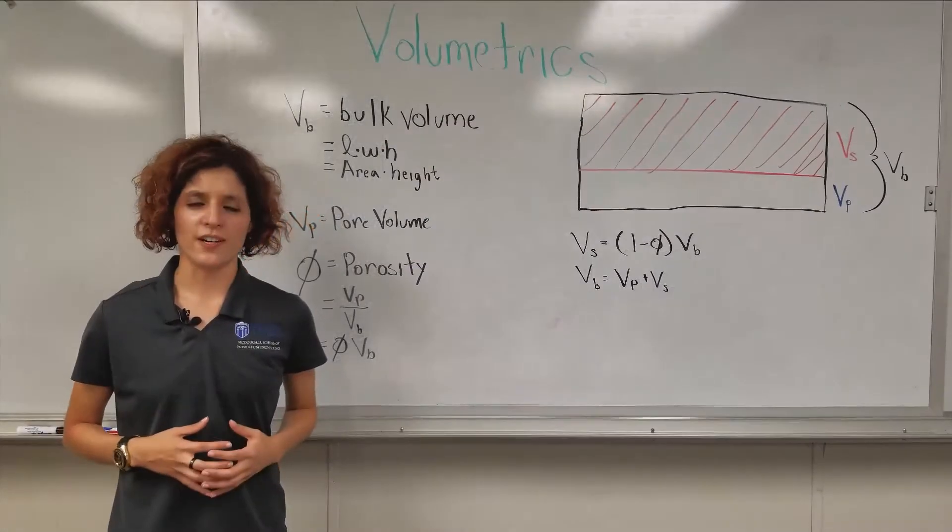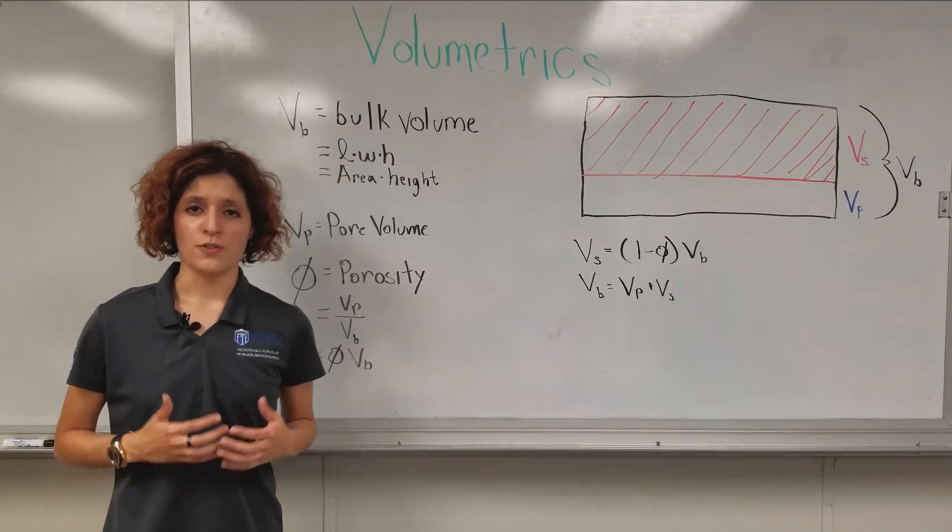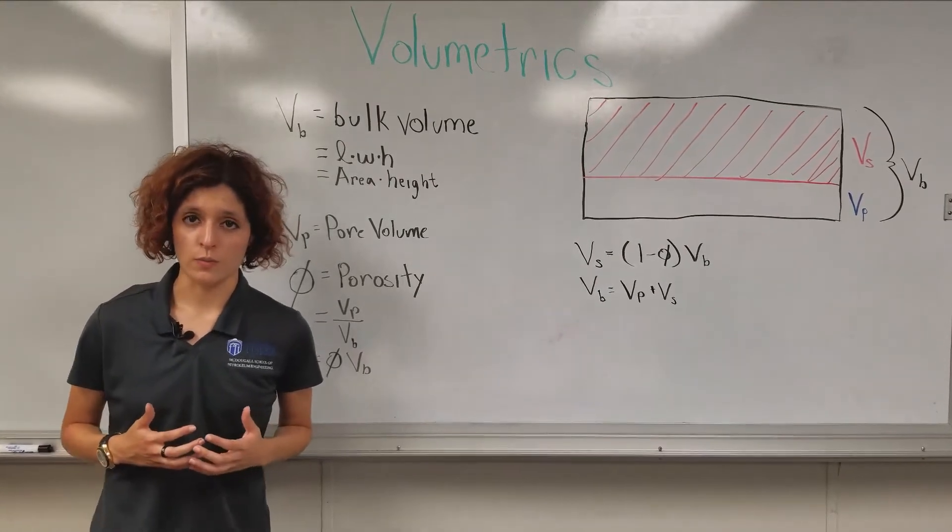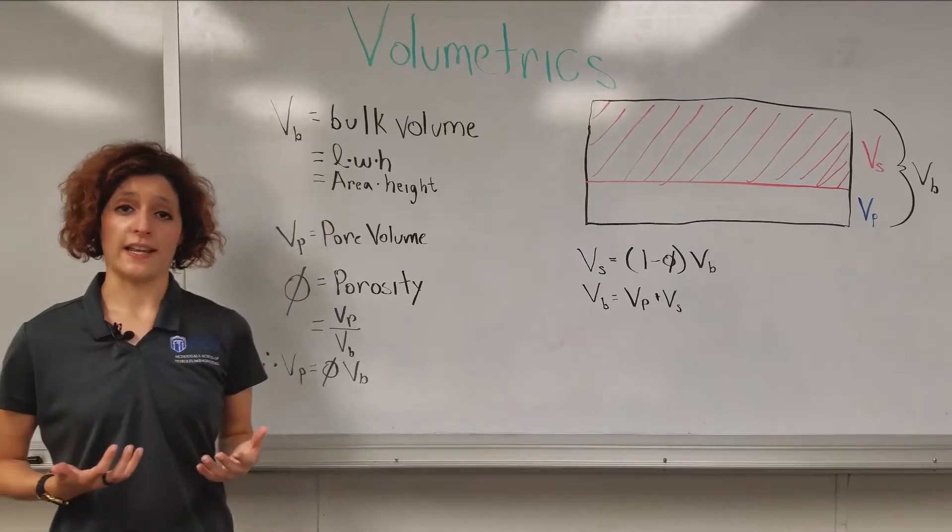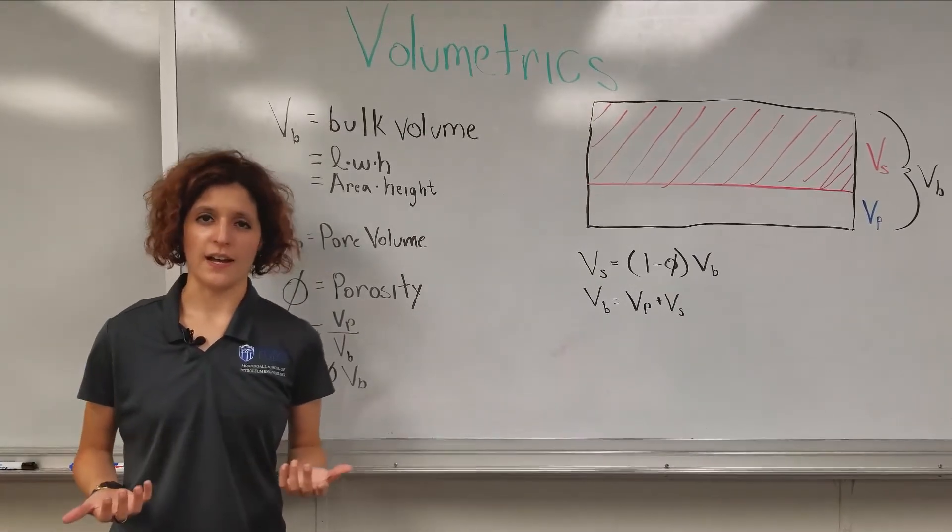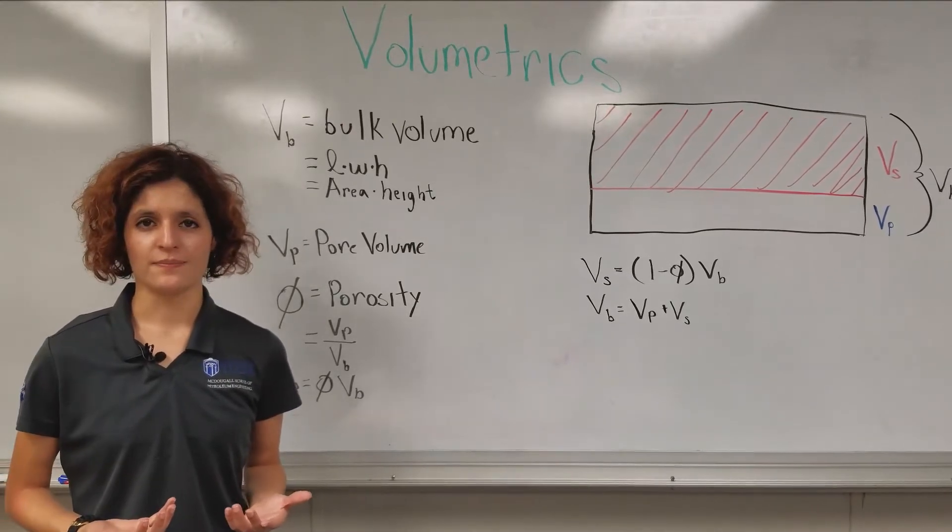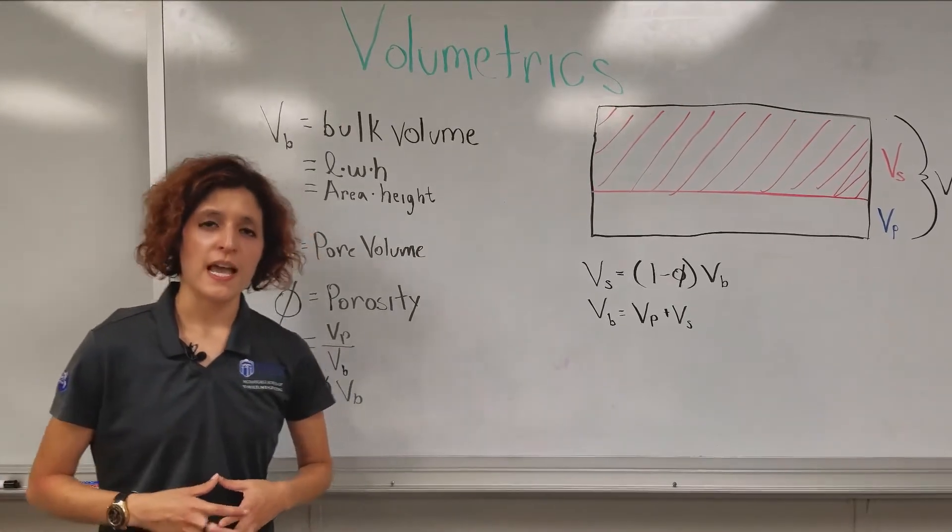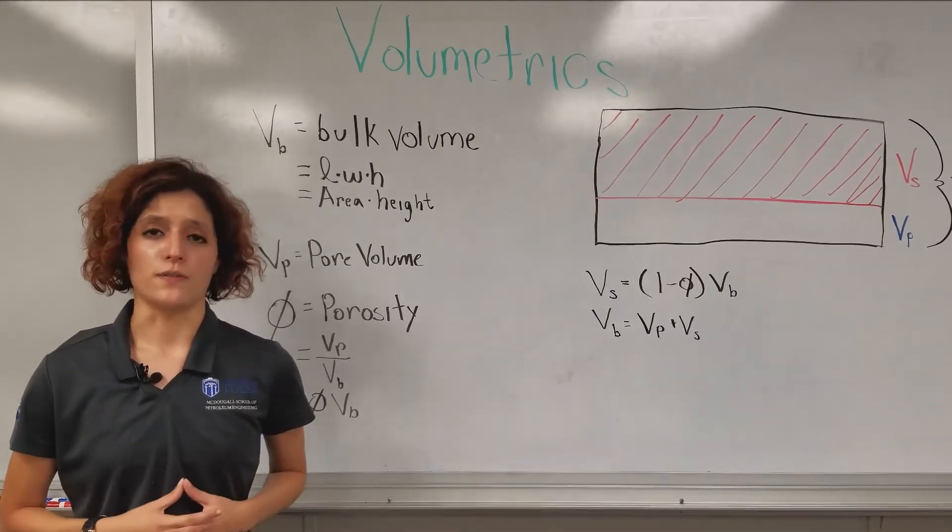It's probably a good idea to start getting used to calling total volume bulk volume. So the bulk volume of our reservoir we'll denote as V sub B. And all it is, is the length times the width times the height. So that's our area of our reservoir times its height. And that is our bulk volume. And this contains all of the solids and all of the fluids of our reservoir.